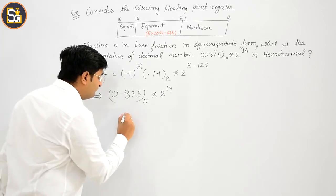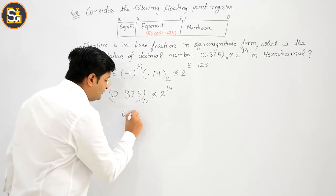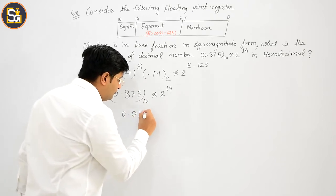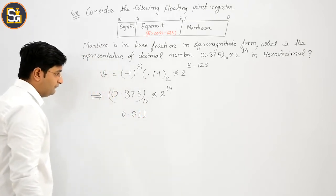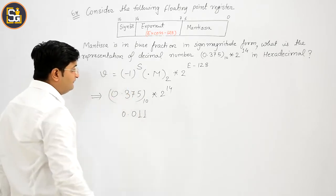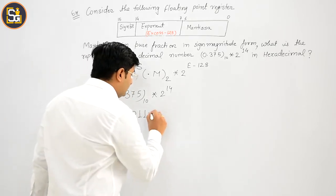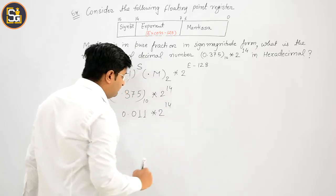Now, 0.375, that is 0.5, 0.25, 0.125. ये तो 0.375 बन गया, into 2 की पावर 14.